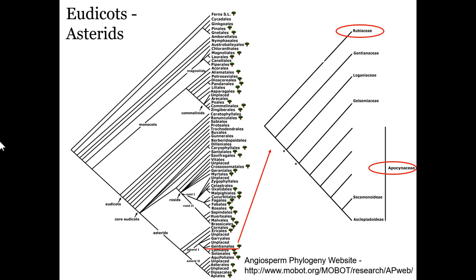All members of the asterids have fused petals, and typically the number of stamens equals the number of petals — that's one of the traits that holds this whole group together. There are a couple of notable groups here. The Apocynaceae includes things like milkweeds, but we're not going to talk about those. We're going to focus on the Rubiaceae.